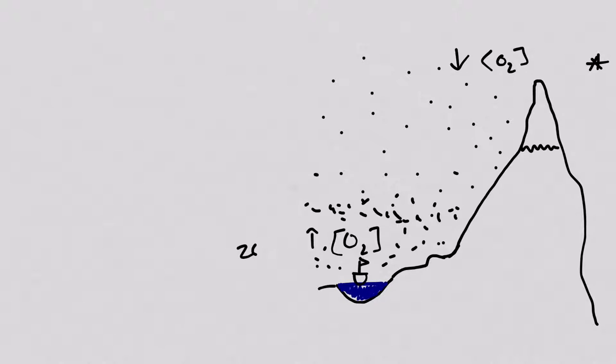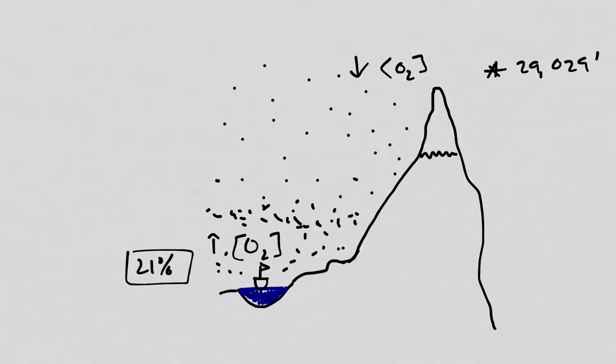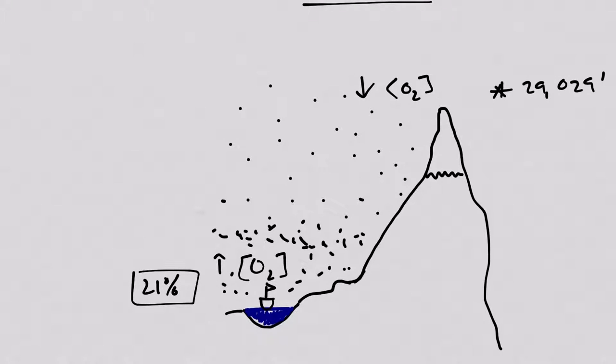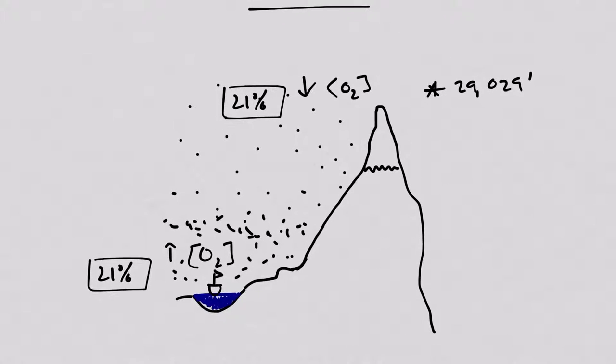Down below at sea level, oxygen comprises about 21% of the molecules. And additionally, up at the top of Everest, oxygen still comprises around 21% of the total air molecules. But there are just fewer molecules at the top, so the concentration of oxygen is lower. This is a problem for breathing because concentration gradients actually drive the flow of molecules into and out of the blood.